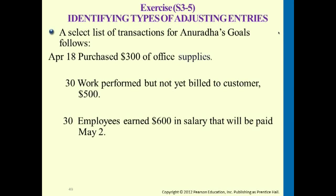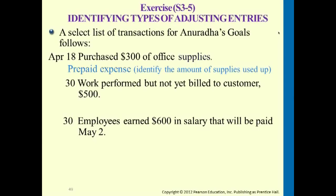April 18th, we purchased $300 of office supplies. At the end of the month, we want to know whether or not we still have $300 worth of supplies. This is considered prepayments — we purchase supplies and later identify the part we used up. For example, if we only have $50 worth of supplies left, we used up $250, which turns into supplies expense.